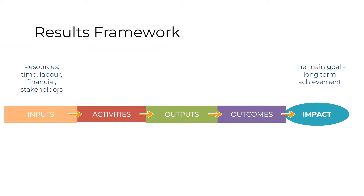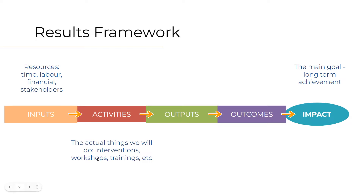As an organization, we will then say: what can we pour into this project? In terms of time, labor, financial resources, and stakeholders we can have involved. Putting all these together, we can then run a set of activities — workshops, trainings, or interventions. Normally these activities we already have in place as an organization. And we think, or maybe we know, that these activities will lead to this goal. Outlining your results framework will really help you plot the milestones that get you there, so if you're not getting there, you'll be able to see what's missing.